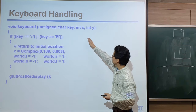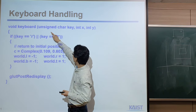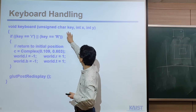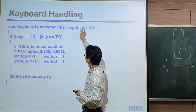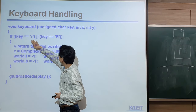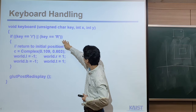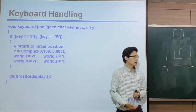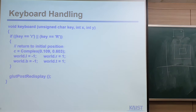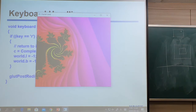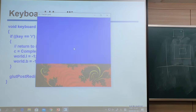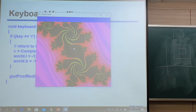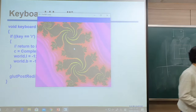For keyboard handling: when we click some key, this function is called with the key value. When small 'r' is pressed, we actually initialize everything. Let me demonstrate — I keep zooming in, then I click small 'r', and you can see it initializes everything back to the original state.